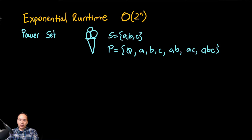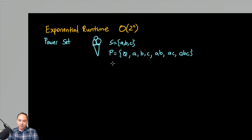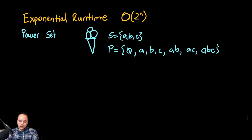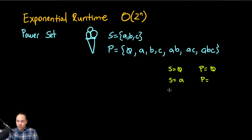So how do we write an algorithm that calculates the power set of a given set? Let's think about the base cases. When you have nothing — no toppings — the power set is just the empty set. When you have only one topping, the power set is nothing and A. When you have two toppings, A and B, you can have nothing, A, and then you add B to everything.